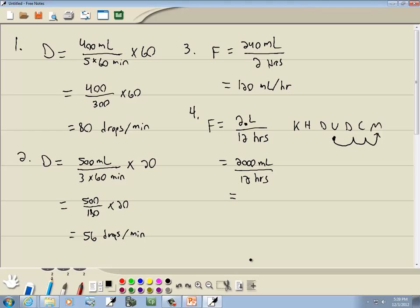So we've got 2,000 divided by 12. I'll go ahead and round it, and it gives us 167 milliliters per hour.